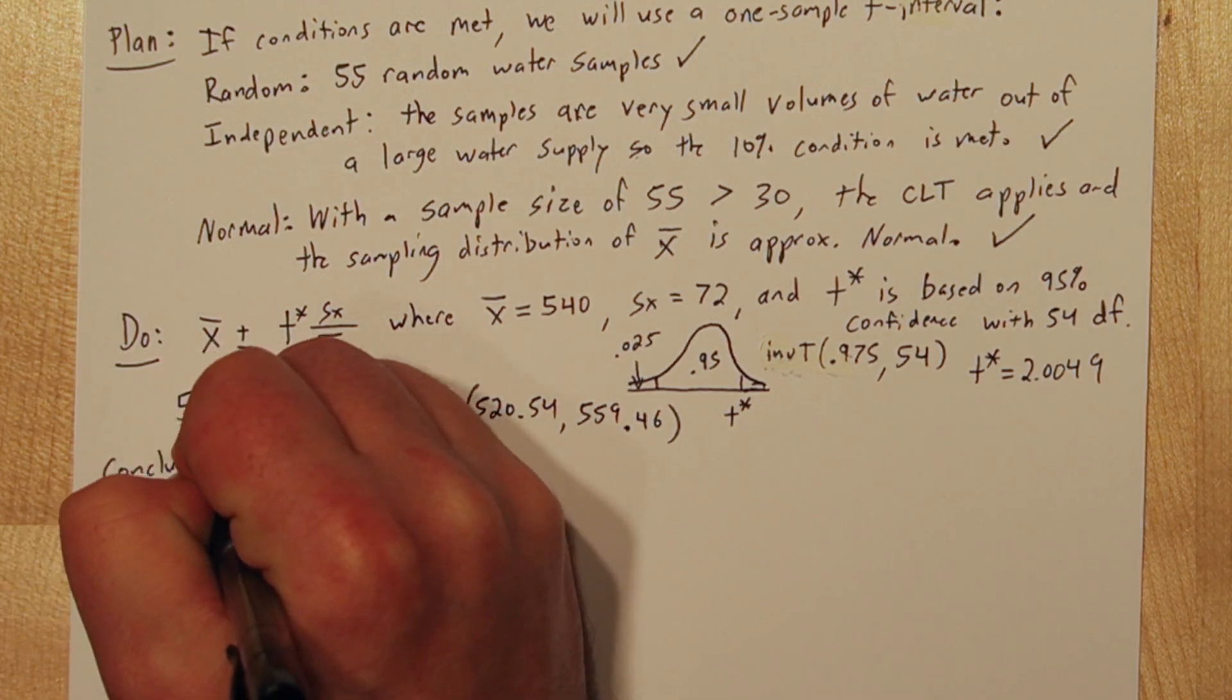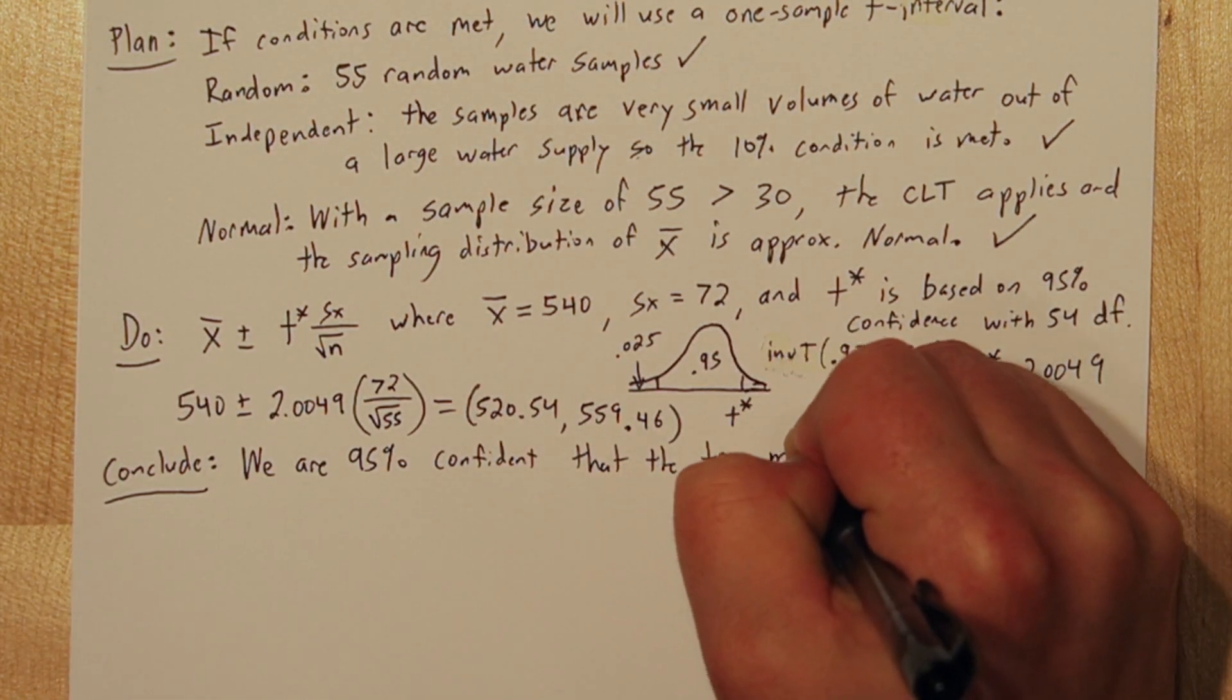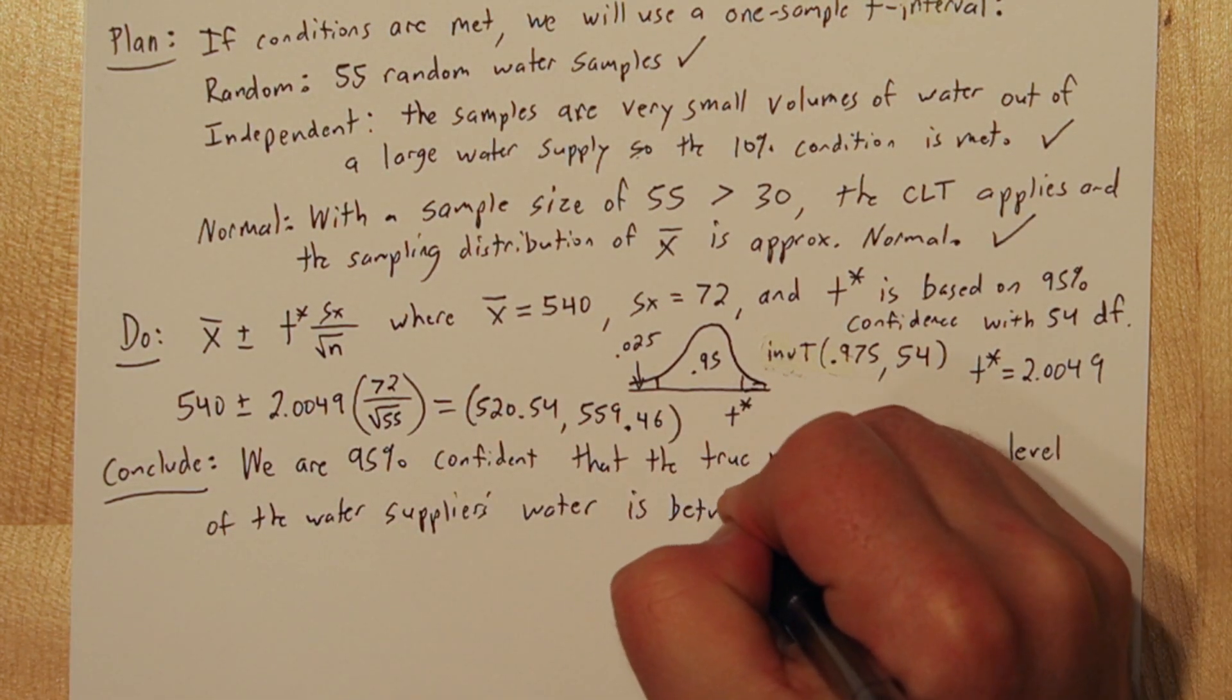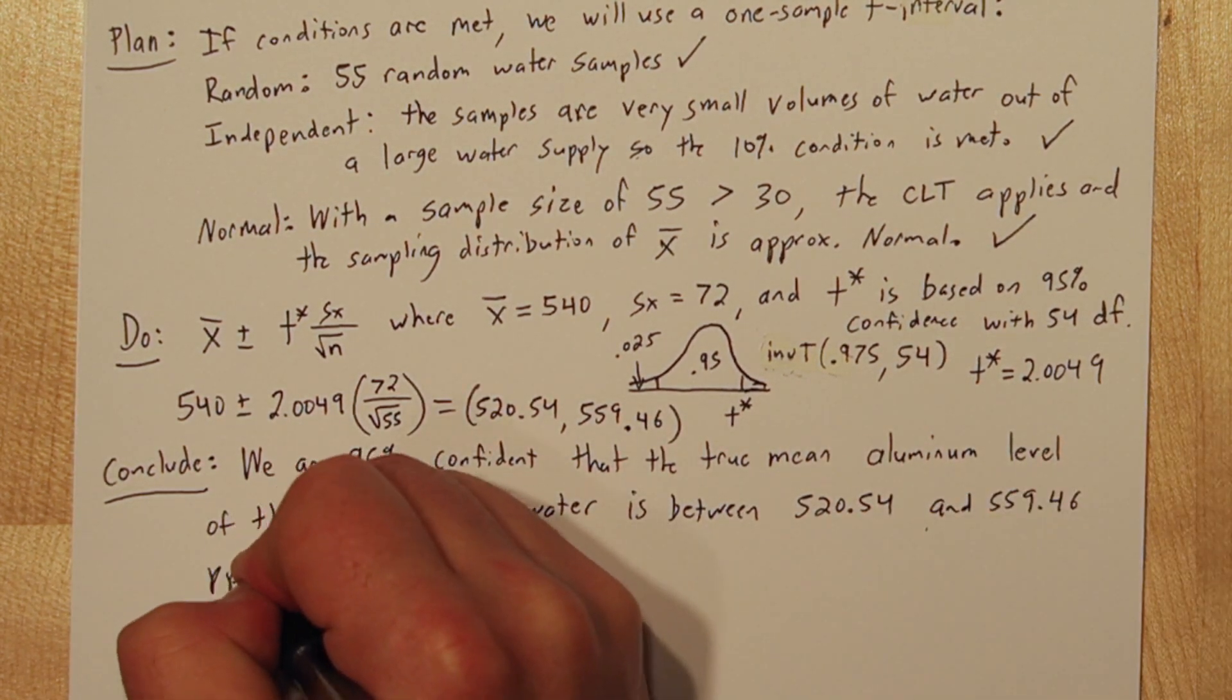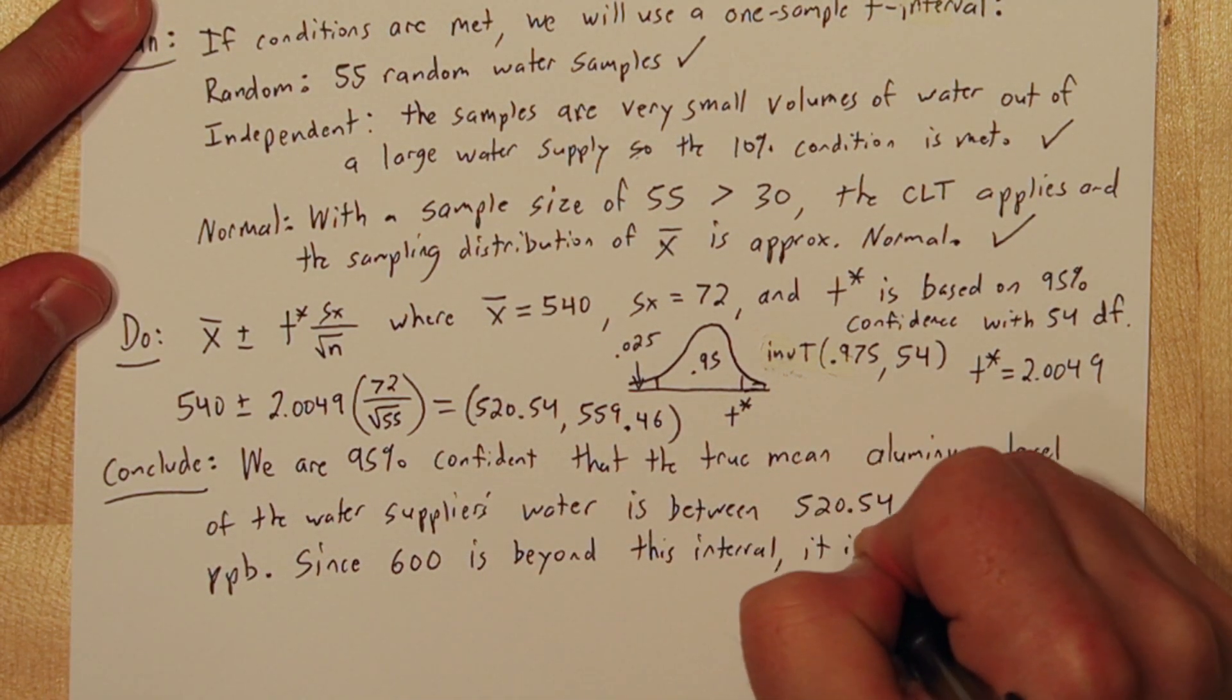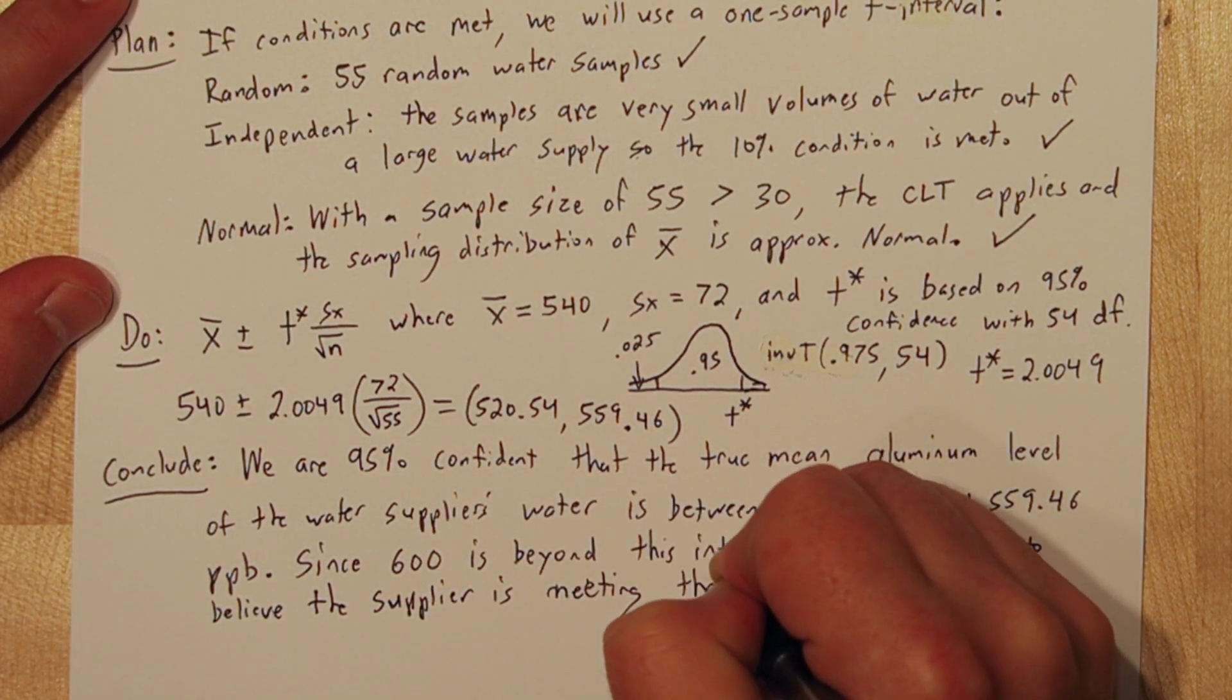Now we're ready to conclude. We are 95% confident that the true mean aluminum level of the water supplier's water is between 520.54 and 559.46 parts per billion. Since 600 is beyond this interval, it's reasonable to believe that they're meeting their goal.